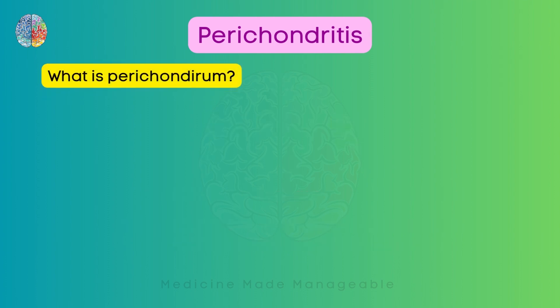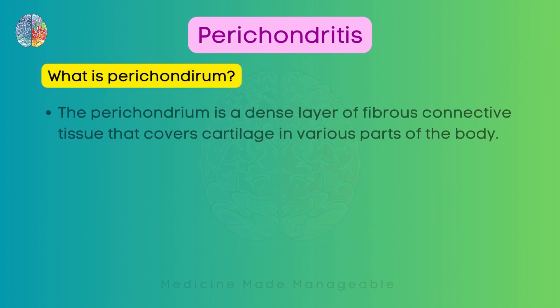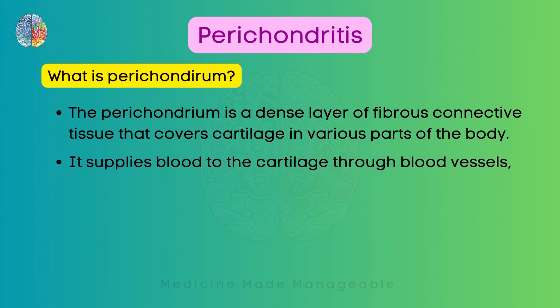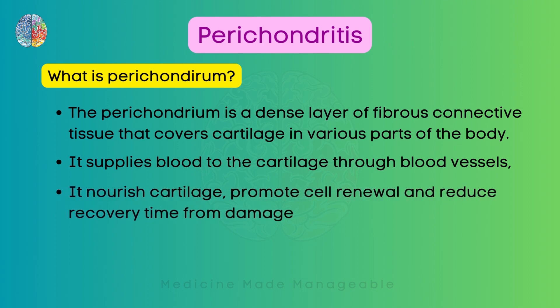The perichondrium is a dense layer of fibrous connective tissue that covers cartilage in various parts of the body. It is responsible for supplying blood to the cartilage, and hence responsible for keeping the cartilage alive. It also nourishes the cartilage, promotes cell renewal, and reduces recovery time from damage.